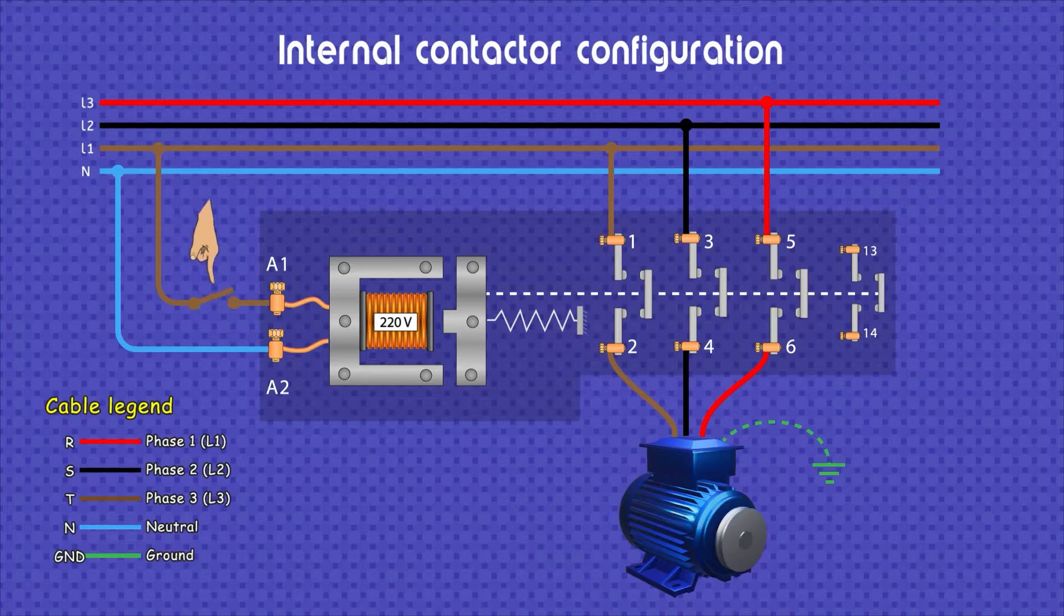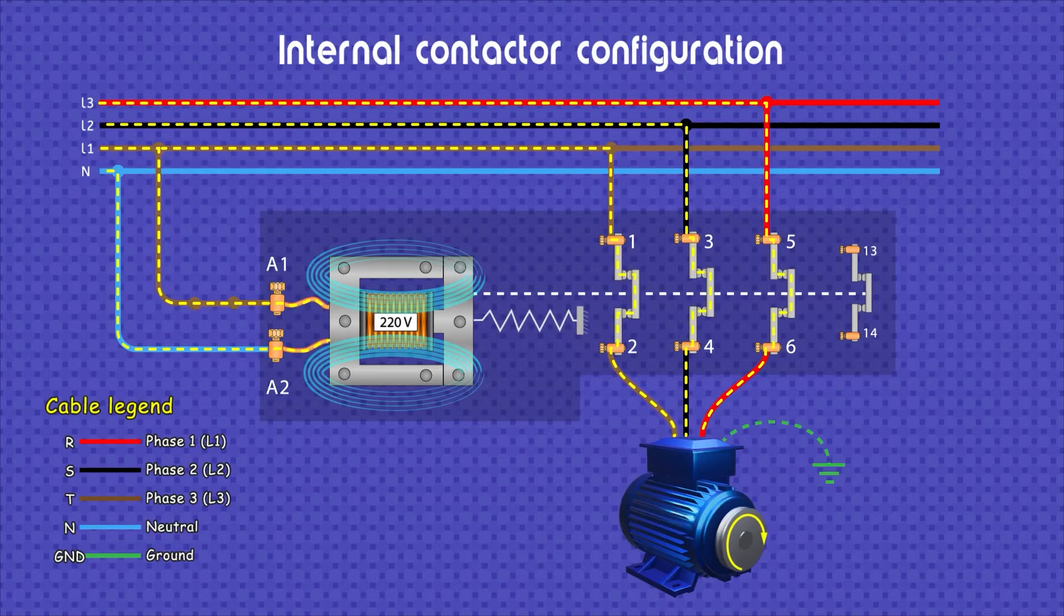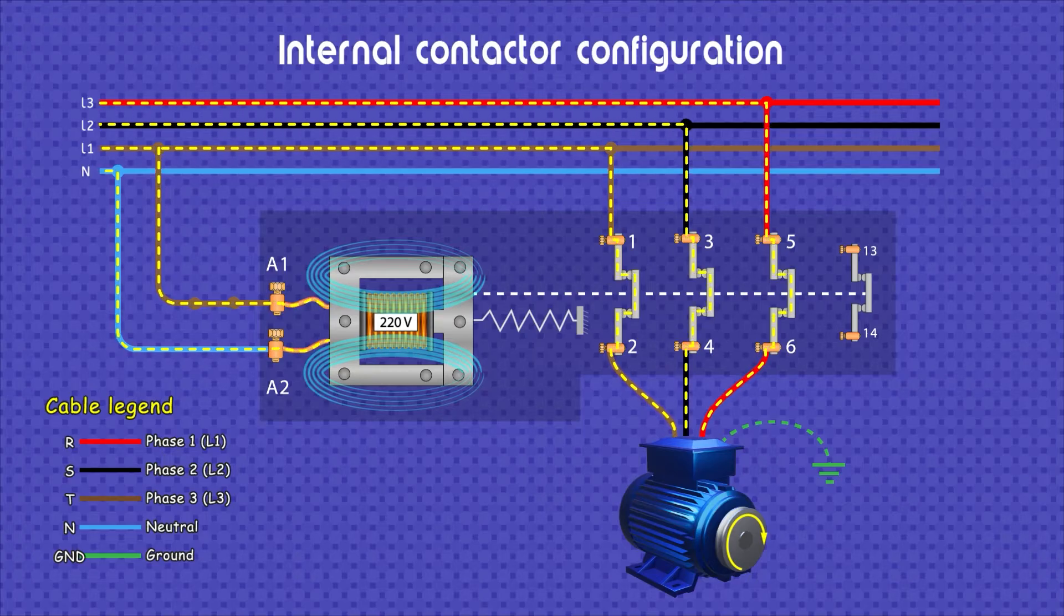If we press the switch, the coil is immediately energized and creates a magnetic field attracting the moving part. In this way, the contacts close and thus the energy flows to the motor. Be careful! The moving lines do not indicate the direction of the current but rather the journey from the energy source to the load.